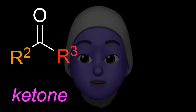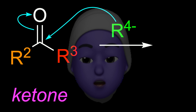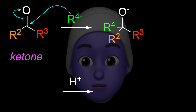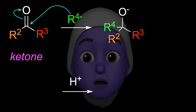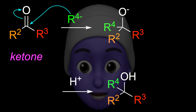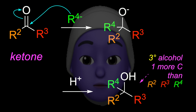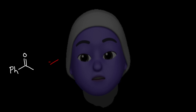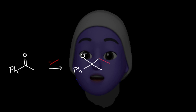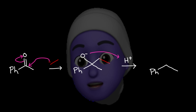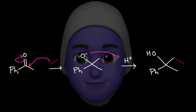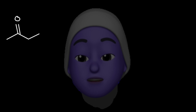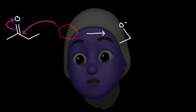Addition of R minus to a ketone gives tertiary alcohols. All three substituents can be different in these — two come from the ketone, and they need not be the same, and one comes from the carbon ion. Here are a couple of examples. First, addition of ethyl minus to phenyl methyl ketone. Secondly, cyclopentyl anion adding to butanone.